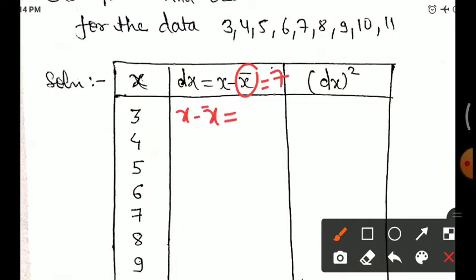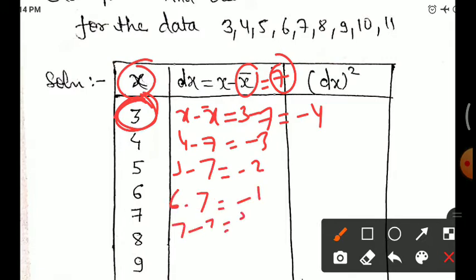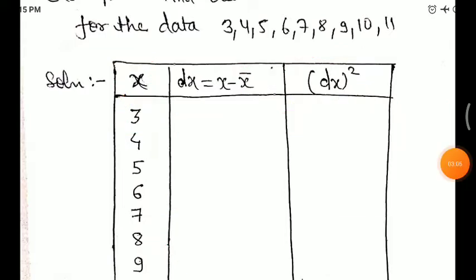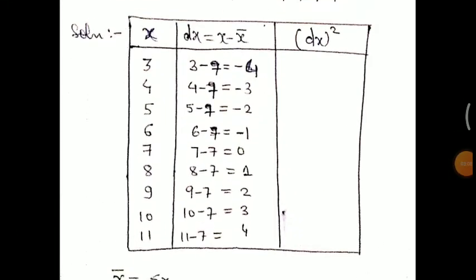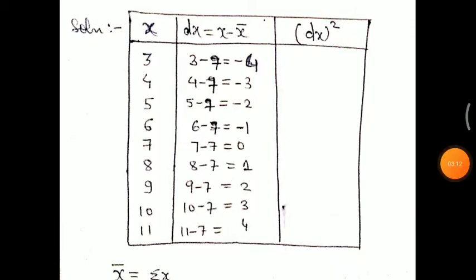Now computing dx, which is x minus x̄. So: 3 minus 7 equals minus 4; 4 minus 7 equals minus 3; 5 minus 7 equals minus 2; 6 minus 7 equals minus 1; 7 minus 7 equals 0; 8 minus 7 equals 1, and so on. Then we square these values — for example, minus 4 squared equals 16.